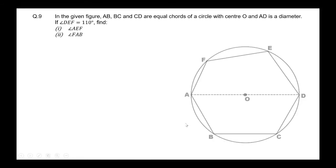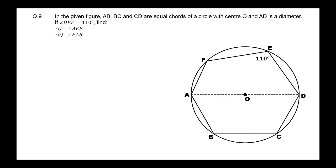Question number nine from exercise 14: In the given figure, AB, BC, and CD are equal chords of a circle with center O, and AD is a diameter. If angle DEF is 110 degrees, find angle AEF and angle FAB.